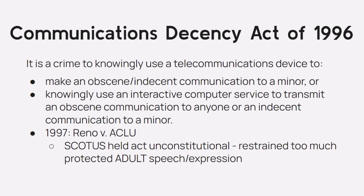The Communications Decency Act of 1996 made it a crime knowingly to use telecommunications devices such as telephones, fax machines, or email to make an obscene or indecent communication to a minor, or to use an interactive computer service to transmit an obscene communication to anyone or an indecent communication to a minor. However, in 1997, in Reno v. American Civil Liberties Union, the Supreme Court held the act was unconstitutional because it restrained too much protected adult speech.